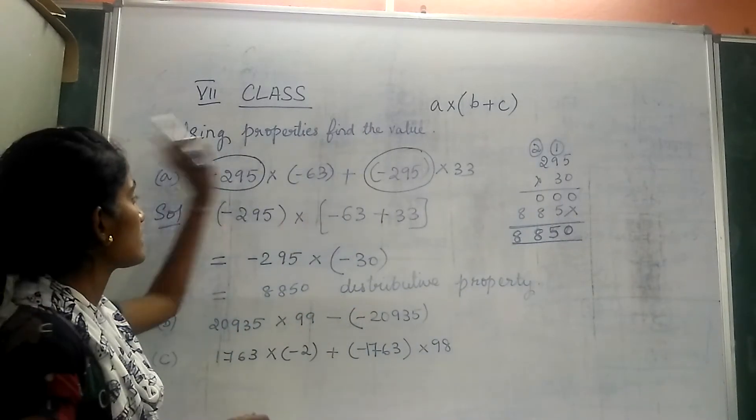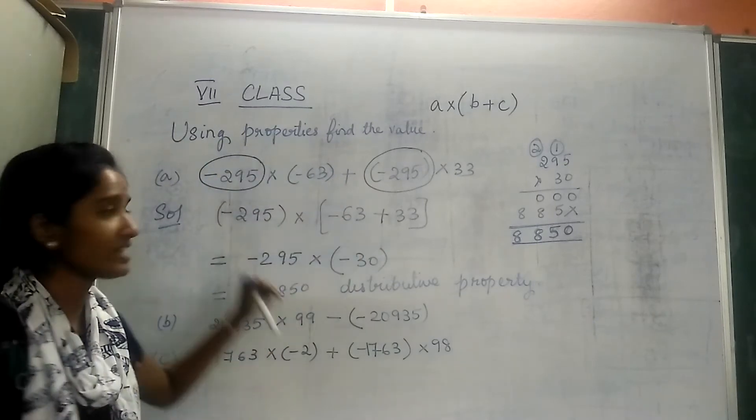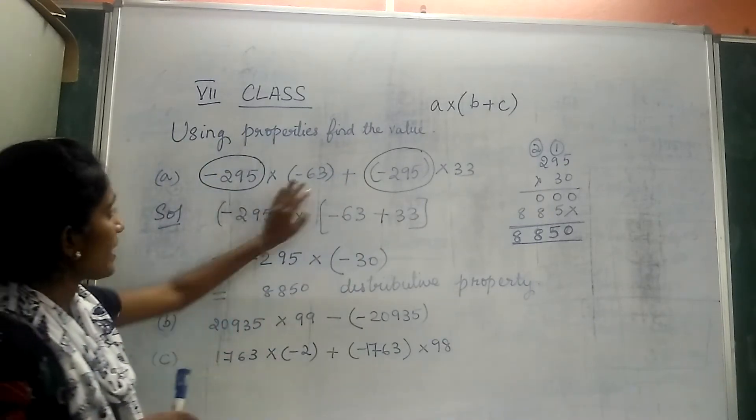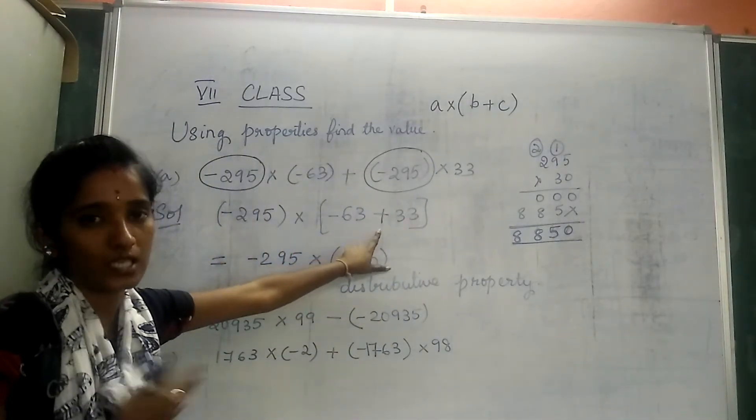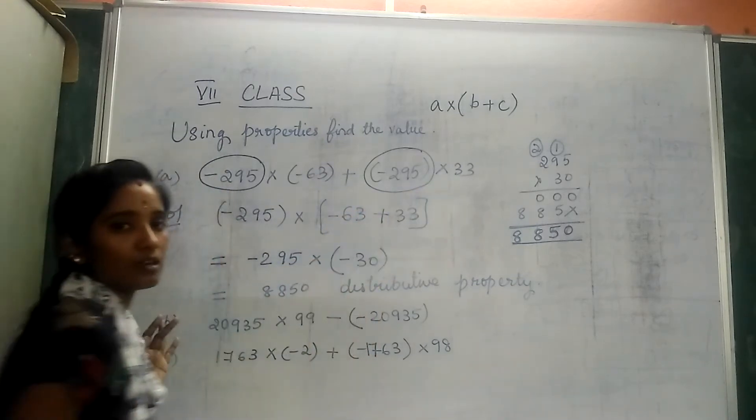So I will take this -295 along with the minus sign outside. So what is left? -63 and 33 with a positive sign. So -63 + 33.